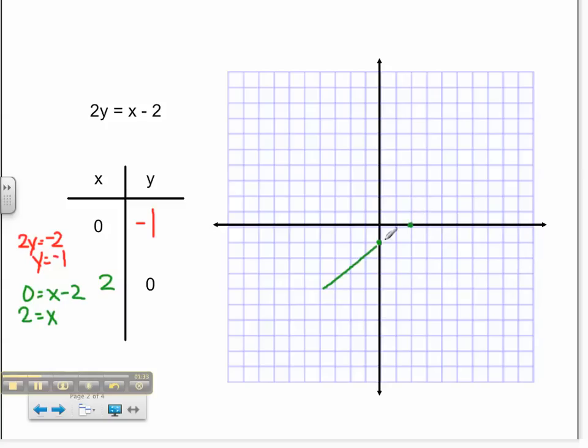I can then use my straight edge to create my straight line, put my arrows on it, and that is the solution for 2y equals x minus 2.